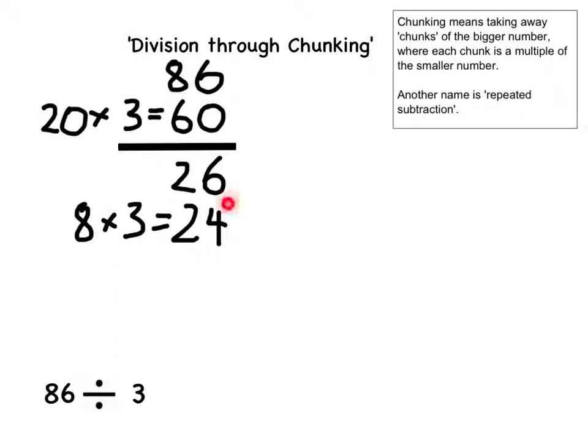Again, I'm going to subtract this chunk from the number that I had before. So 26 subtract 24. Before I solve the subtraction, I'm going to use another ruler to draw a horizontal line to separate my working out. Now I'm ready to write the answer to this subtraction. 26 subtract 24 is 2.